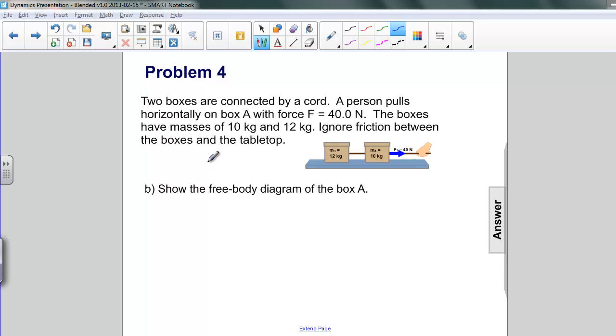Here in part B, we're asked to show the free body diagram of box A. Box A is the box at the front. I'm going to draw a picture frame around this as well, and we're going to concentrate just in this area to draw our free body diagram. So we'll use our usual dot to represent the box.